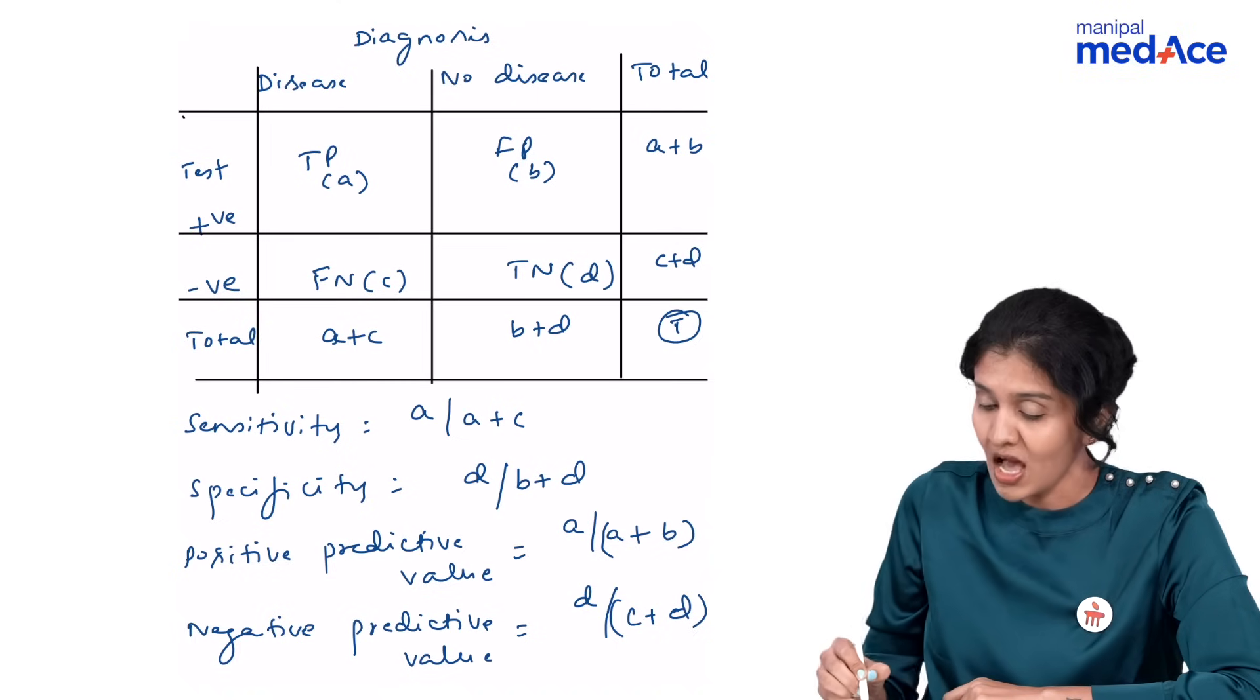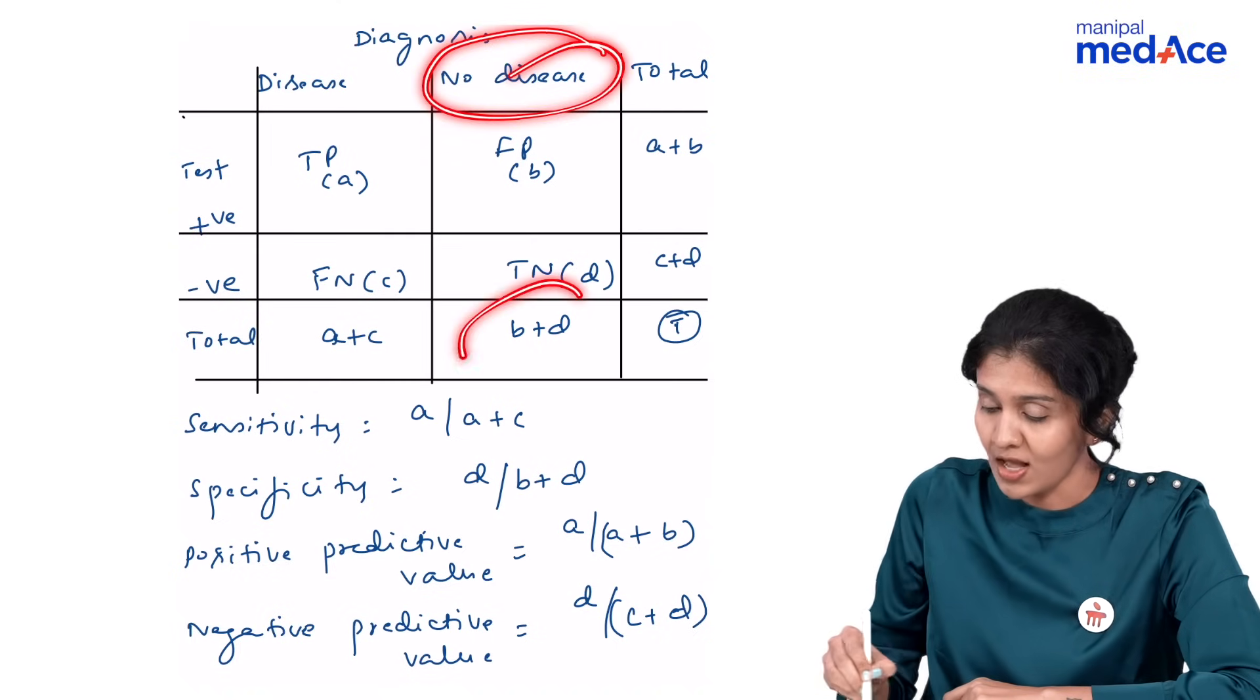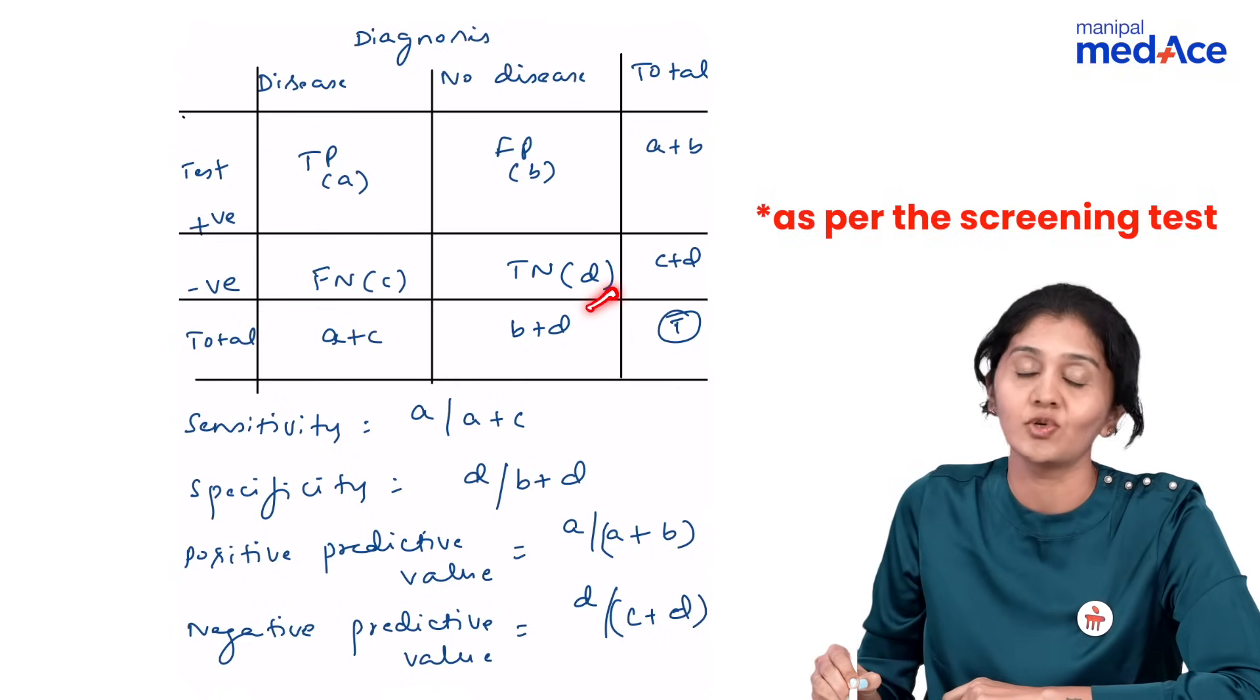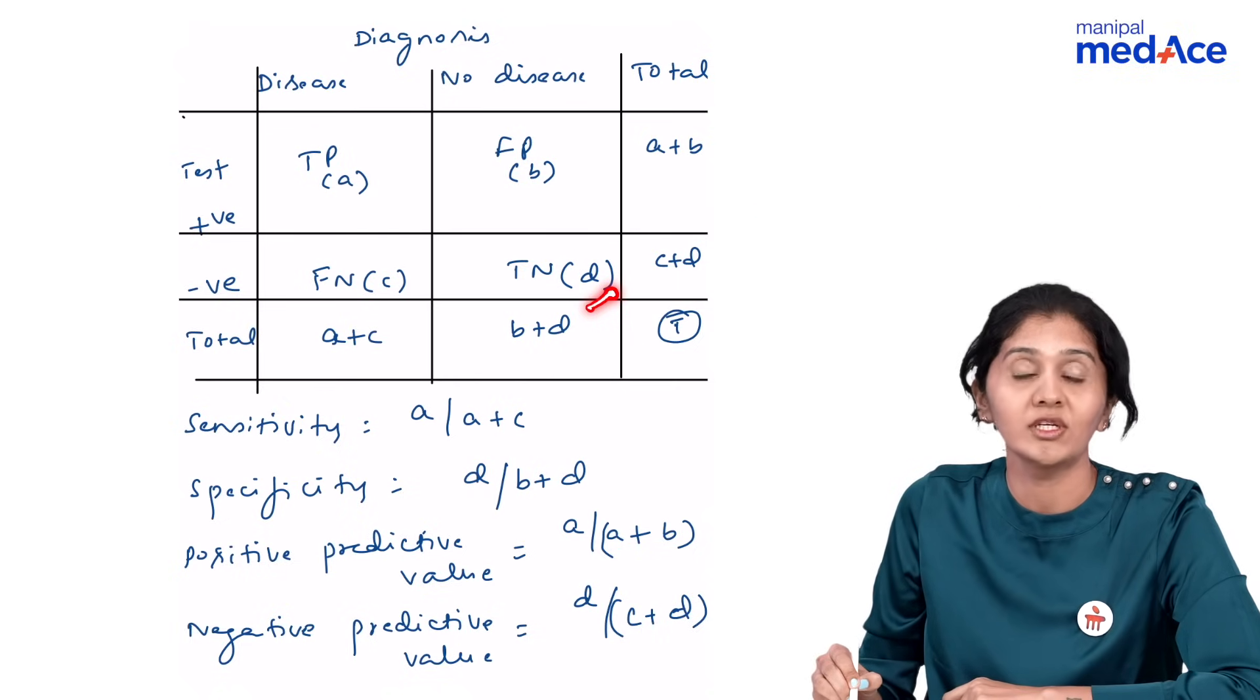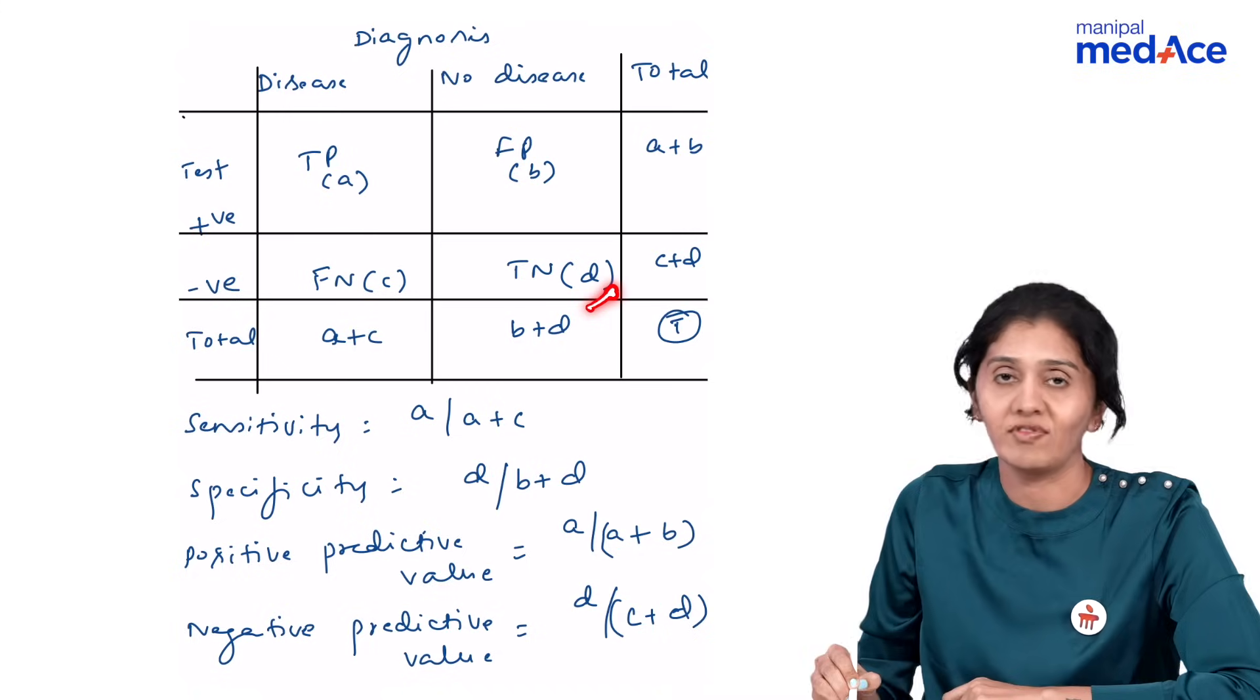What is specificity? Out of the non-diseased, how many do not have the disease is specificity. It tells us about the ability of the test to detect all those individuals who do not have the disease.